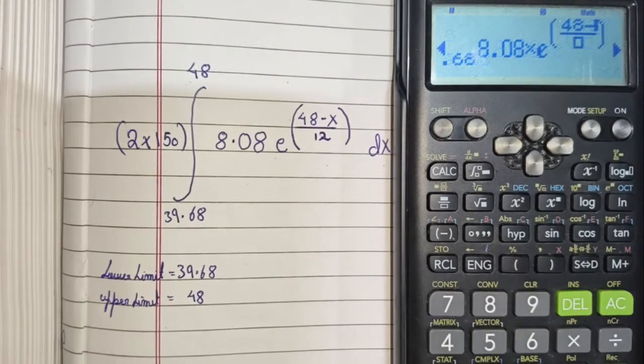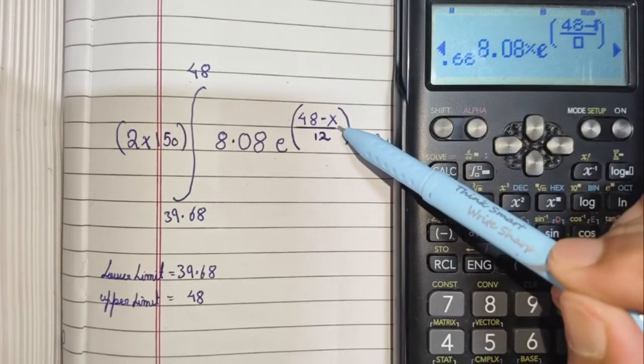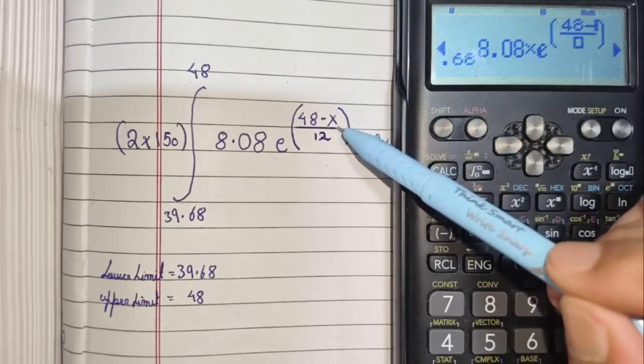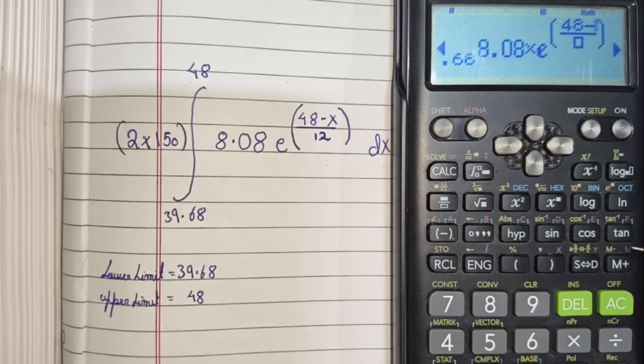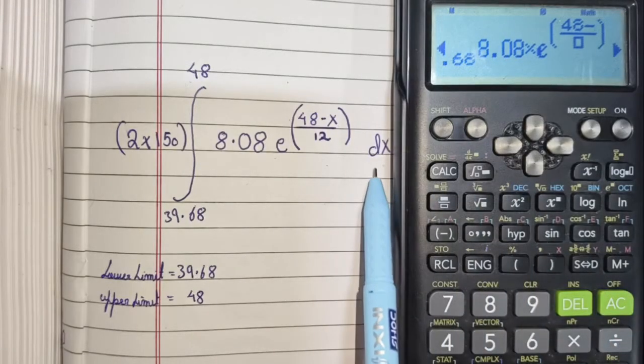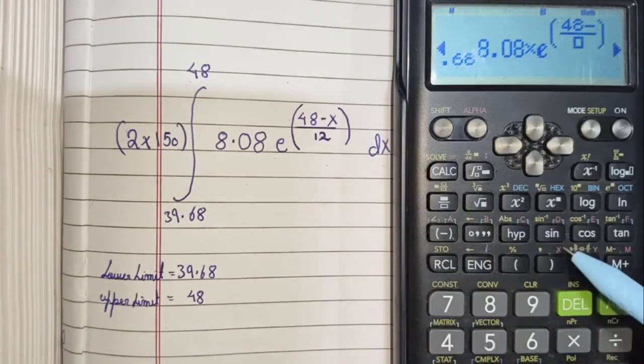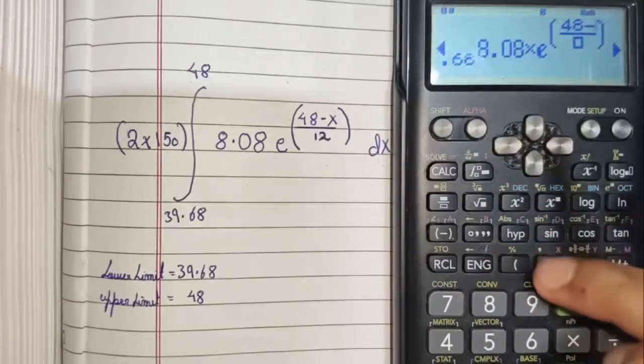How to enter this x? This is where most people get confused. Here, you will need your alpha key, and then choose one of these variables from here. Since our variable of integration is dx, let's choose x. Press alpha, press x.